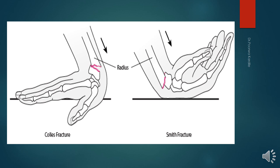The main difference between the two fractures: Smith's fracture is a volar displacement fracture, meaning the distal end of radius is displaced toward the palm with the bone fragment projecting toward the palmar side. Colles' fracture results in dorsal displacement, causing bone fragments to bend toward the back of the hand.